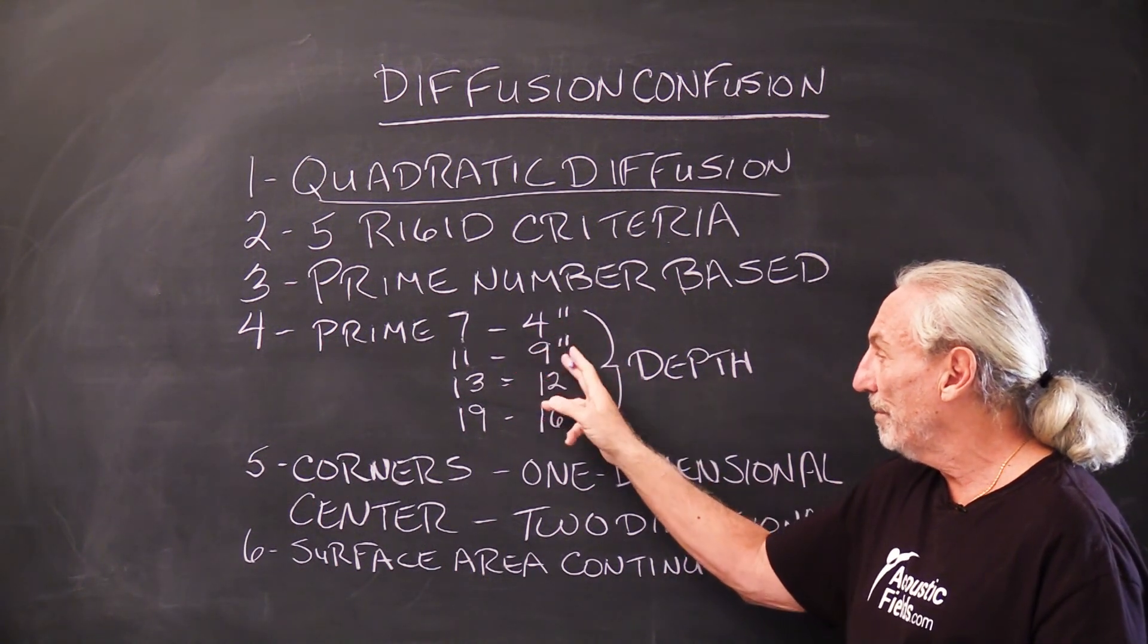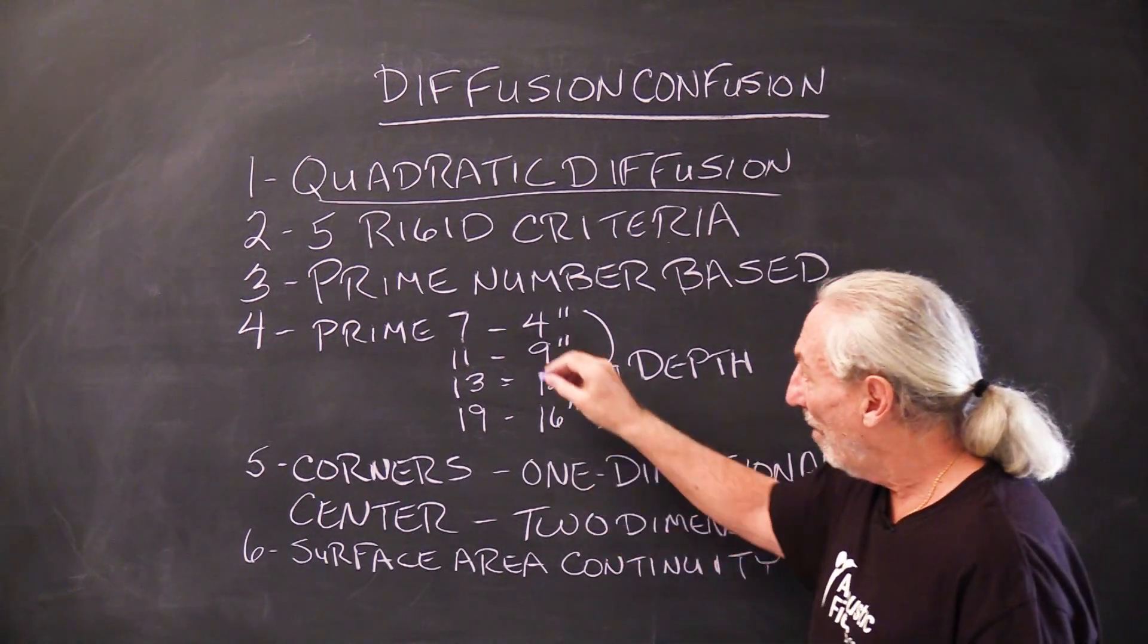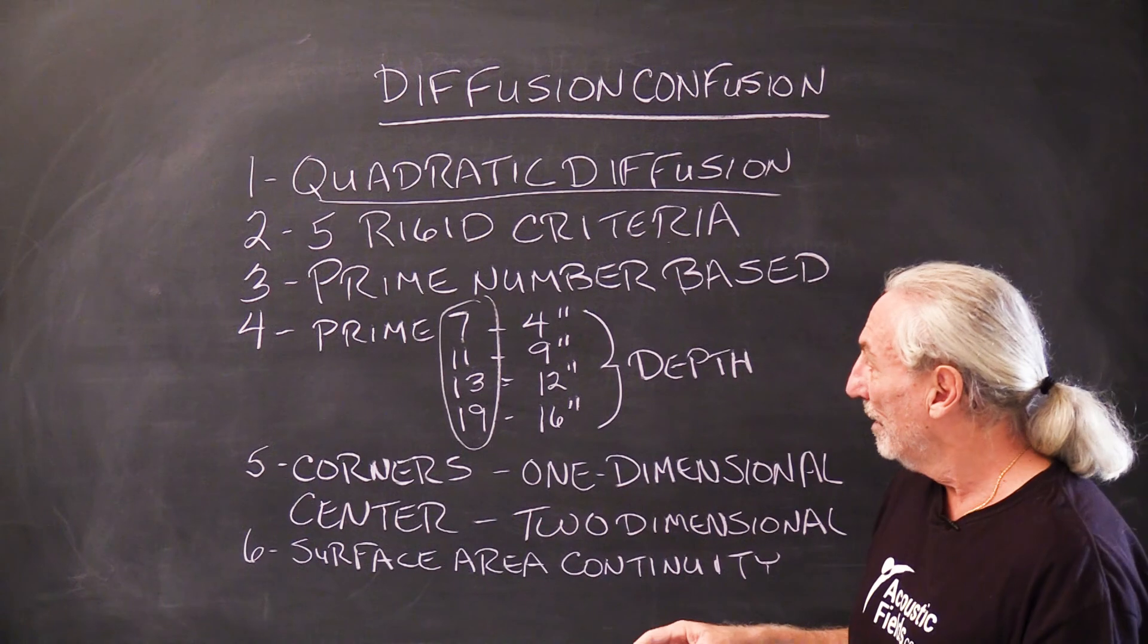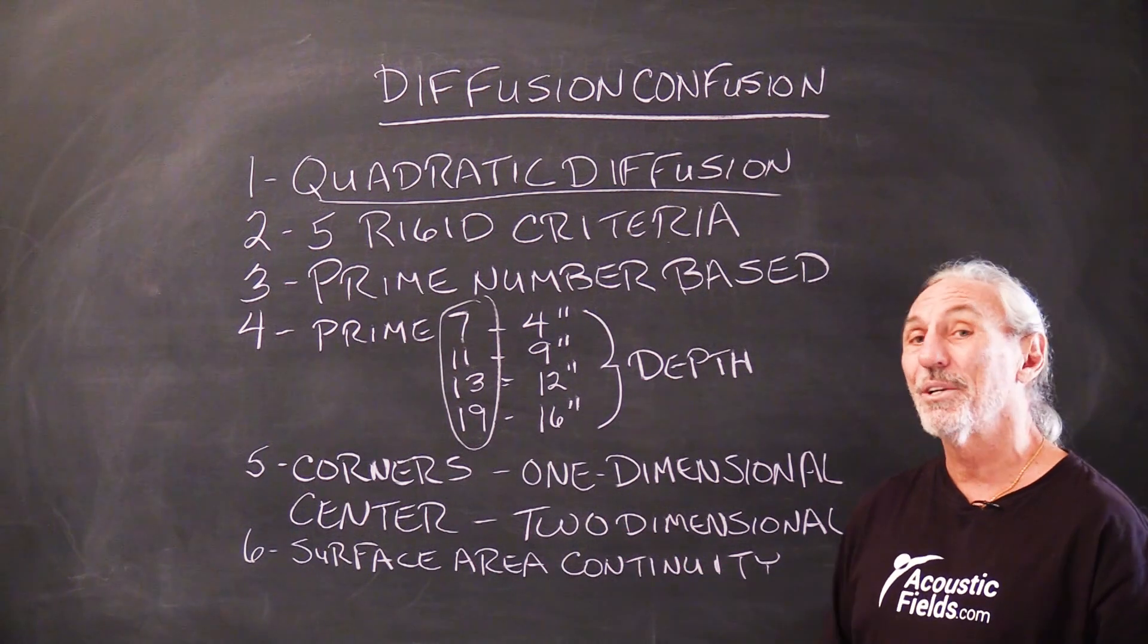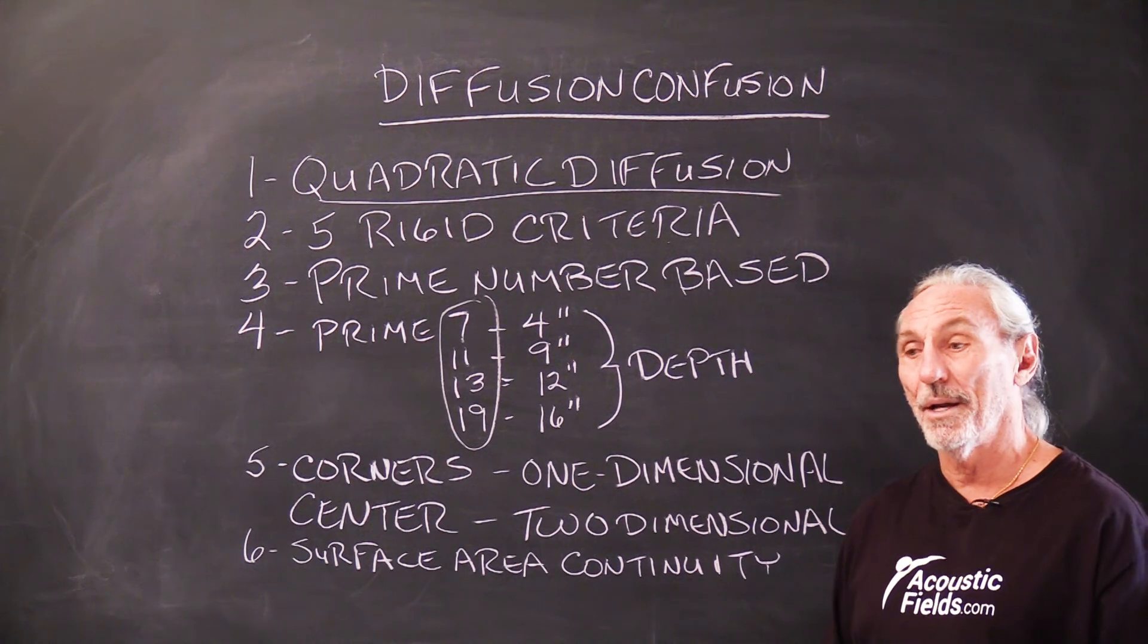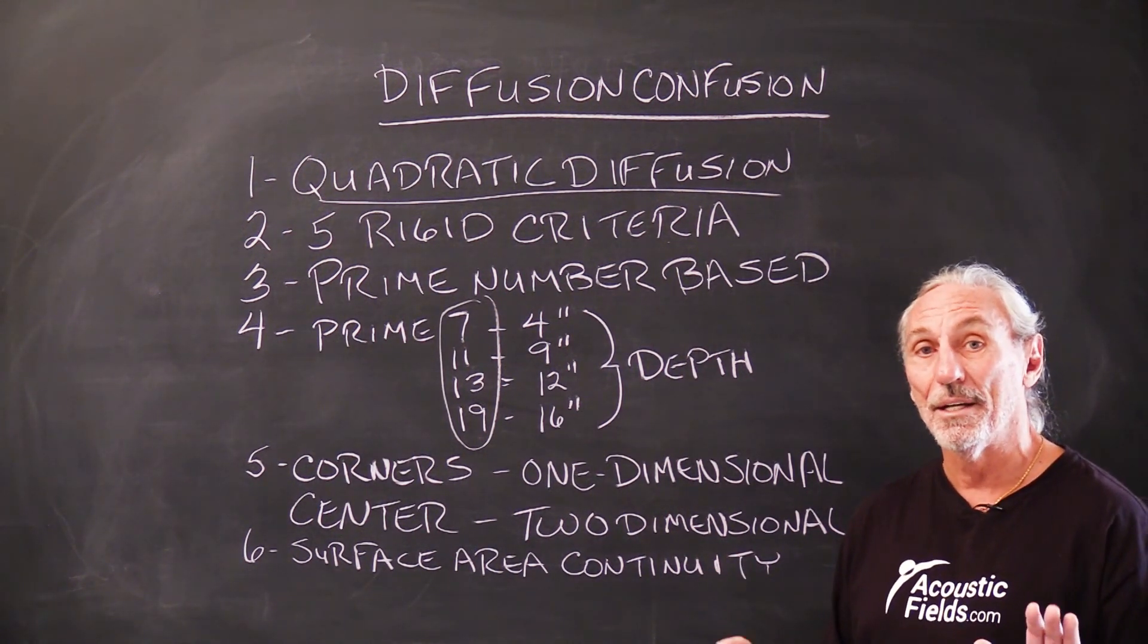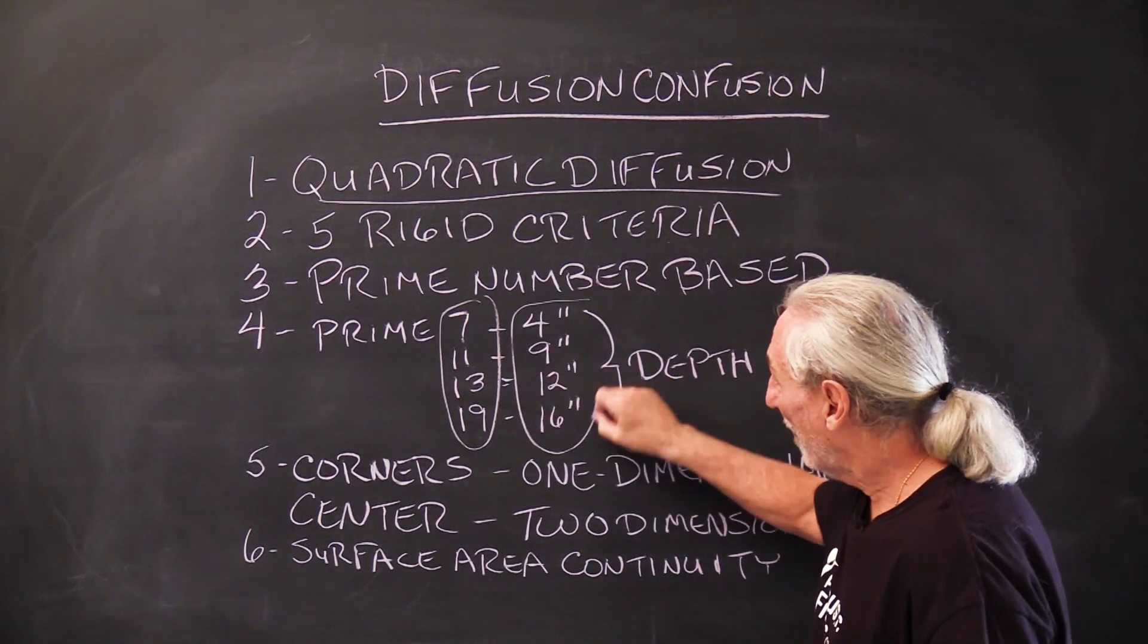Quadratics are prime number based. It's a complicated modulus formula. We won't get into the math, but let's look at some dimensions. The prime 7 is four inches deep, the prime 11 is nine, the prime 13 is 12, prime 19 is 16 inches deep. All of these prime numbers have different distance requirements that you must sit away from them. So a lot of calculations have to go into this. Your wants and needs, well, let's put it here because it'll look nice. The minute I start hearing that, I know the room is in trouble.